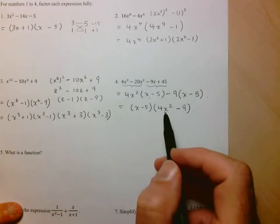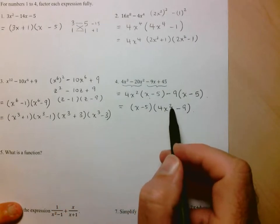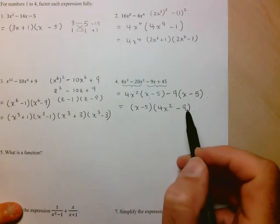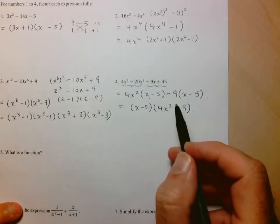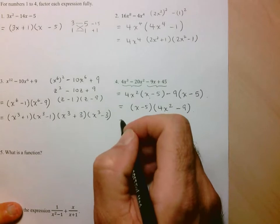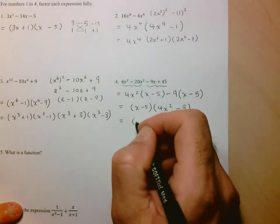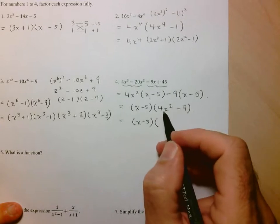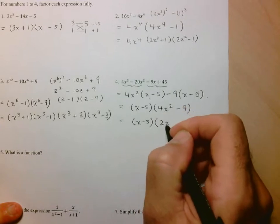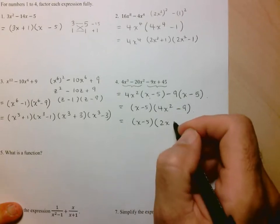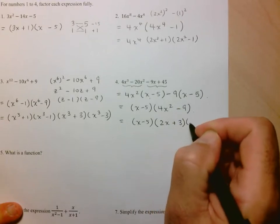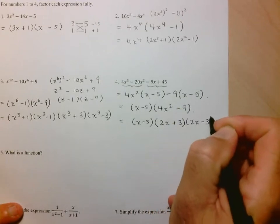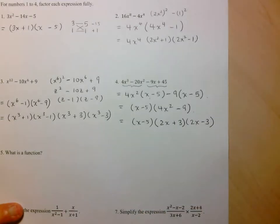Now, hopefully, you're also noticing, hey, wait a minute, 4x squared, that's a perfect square. 9 is a perfect square, so I can actually keep going here. So here, x minus 5. And here, this is like 2x all squared. And this is 3 squared, so 2x plus 3 times 2x minus 3. And there we go. That's as far as we can go.